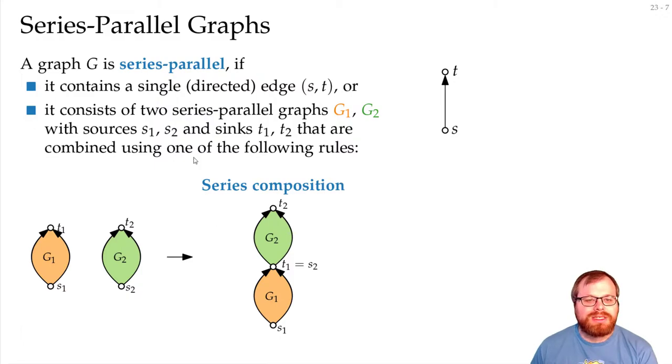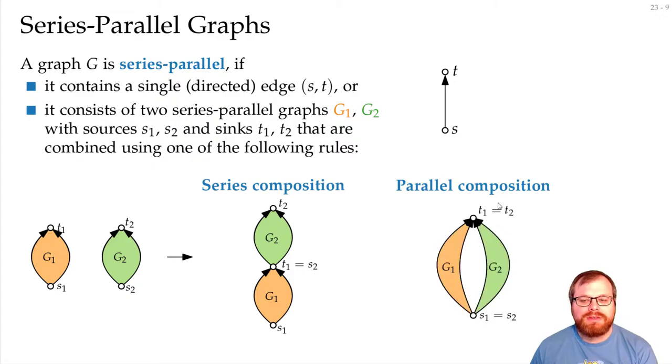The second option is, as the name Series-Parallel says, a parallel composition. For that, we identify both the sinks and both the sources with each other. And that gives us a graph that looks like this.